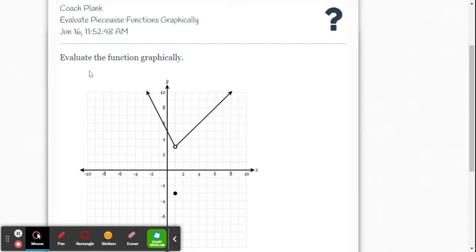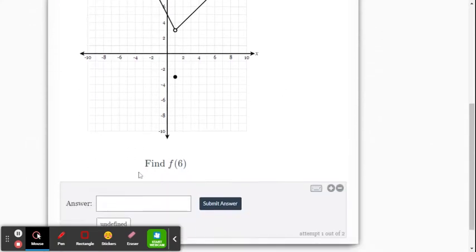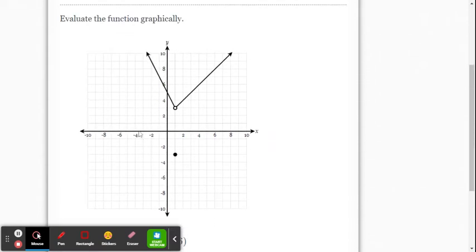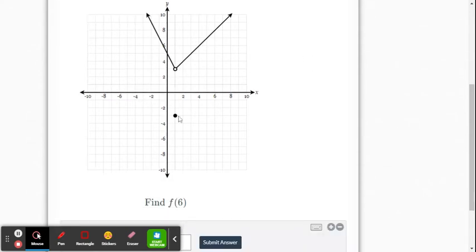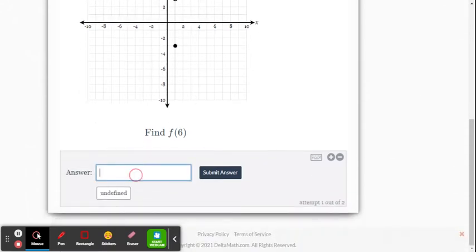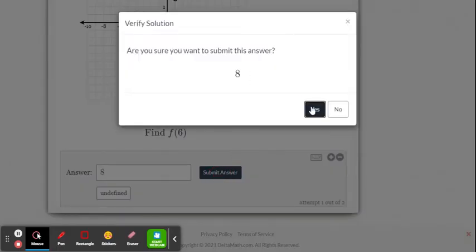The question is going to be, evaluate the function graphically that gives you a graph. And it gives you the input value, f of 6. So remember, input values are the x values. The output value would be your y value. So when we input x is 6, we can look at the graph and see that y is 8. So when x is 6, y is 8. So we're going to type in 8, submit our answer.